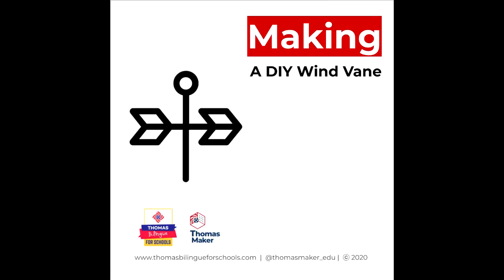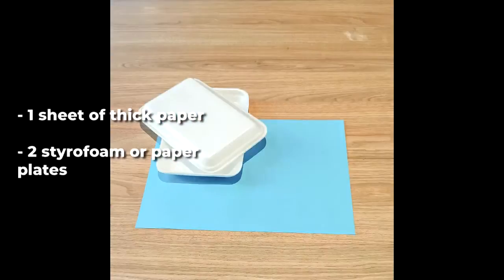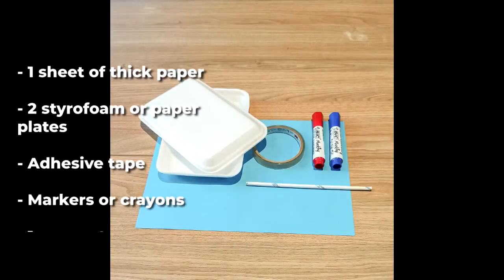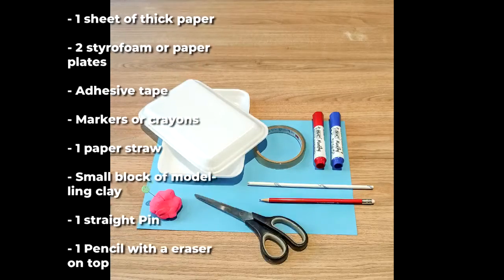Making a DIY wind vane, you will need: one sheet of thick paper, two styrofoam or paper plates, adhesive tape, markers or crayons, one paper straw, one small block of modeling clay, one straight pin, and one pencil with an eraser on top and a pair of scissors.